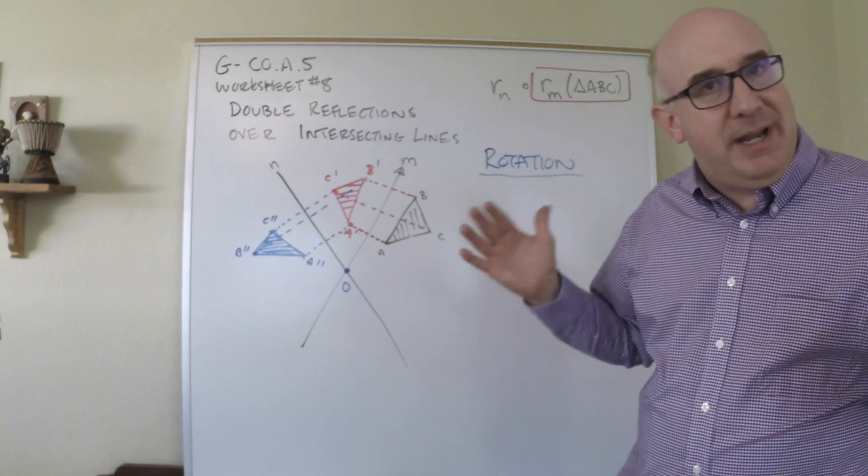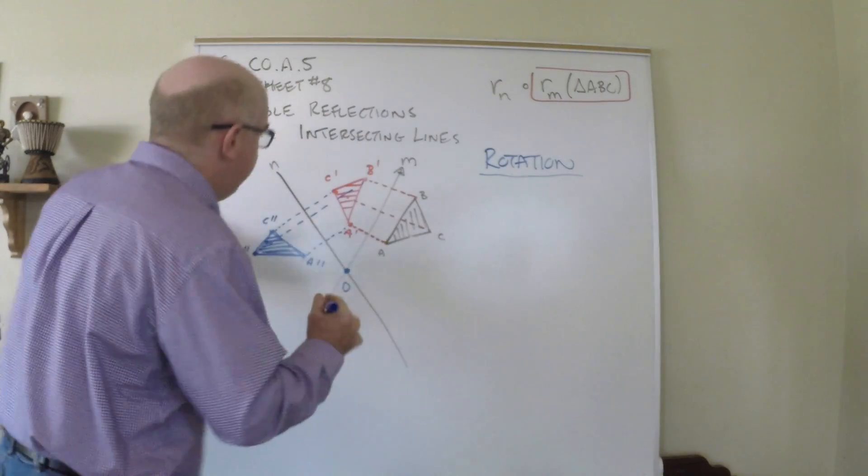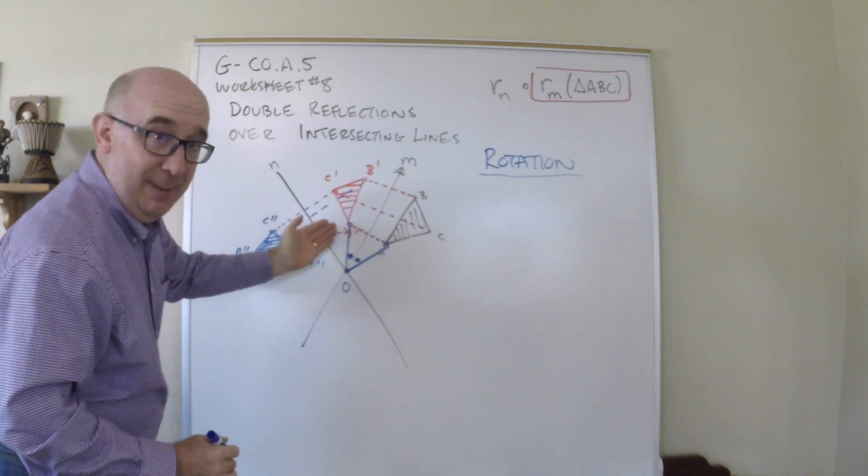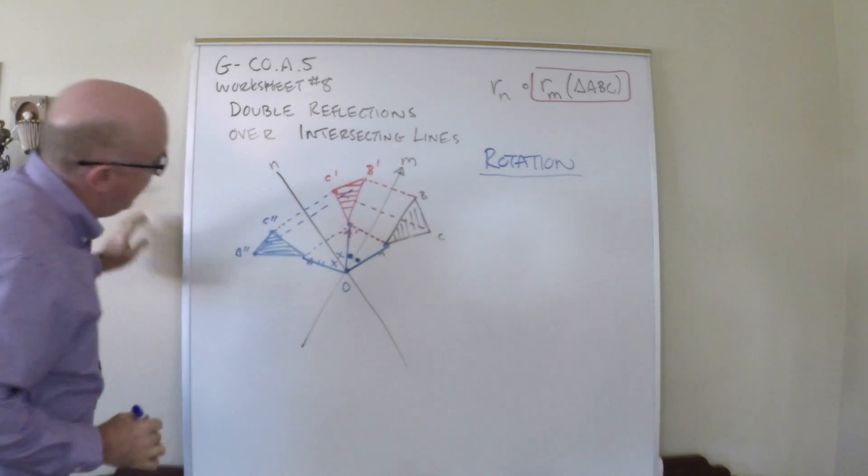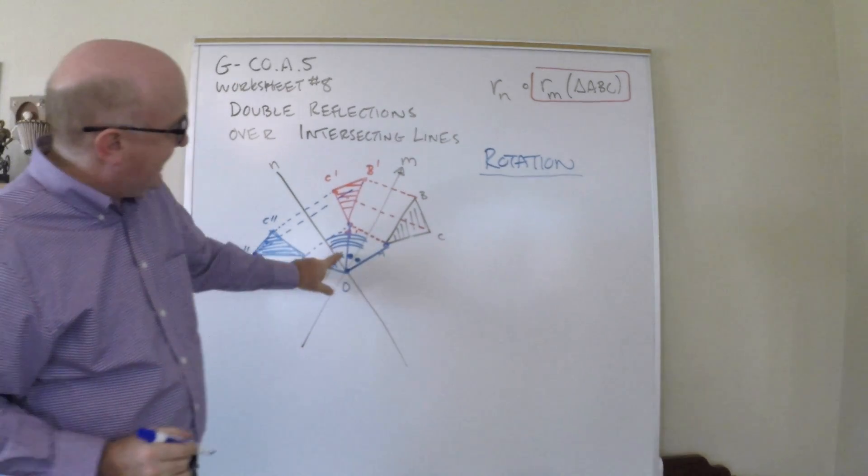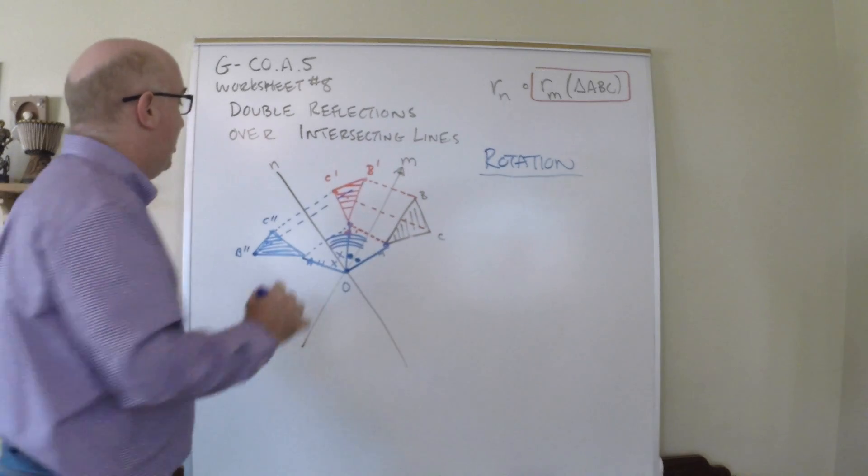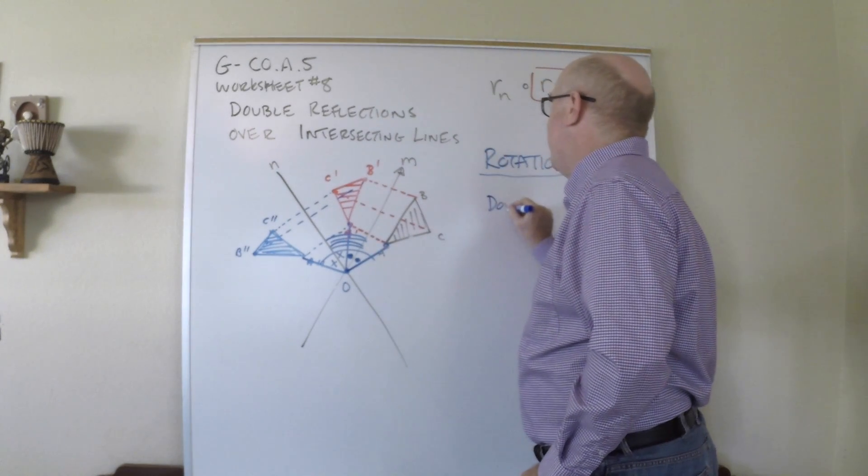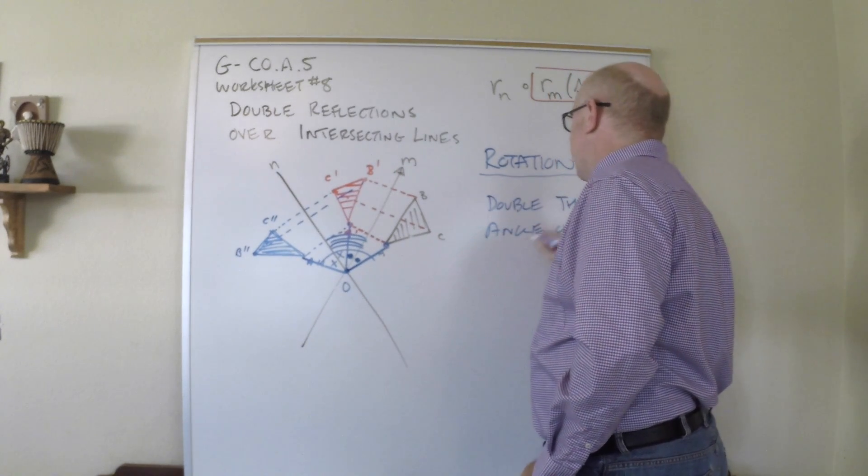Now the second thing is, how big is the rotation? Well, do you remember with the translation, there was a nice relationship there? There's a nice one here too. Take a look. This angle here, it got reflected. So that angle happened here to here. The angle from that point to the next one got reflected as well. See how it got used twice. So here is the angle between the two lines, an X and a dot. But the total rotation was two X's and two dots. So the total rotation is exactly double the angle of intersection.